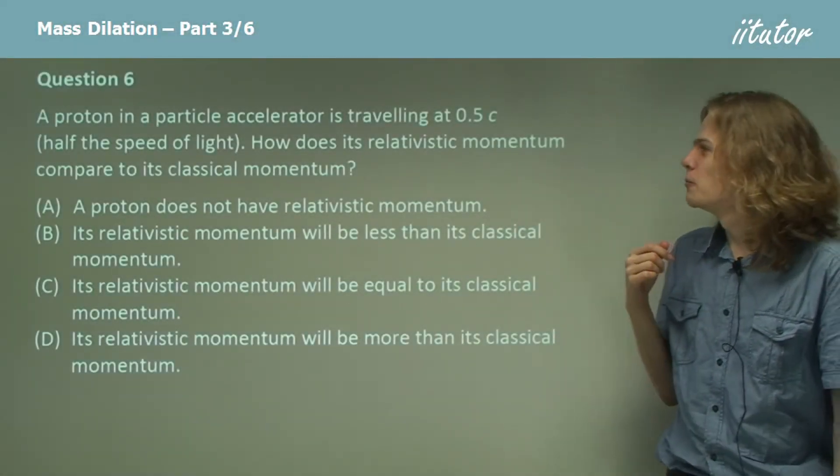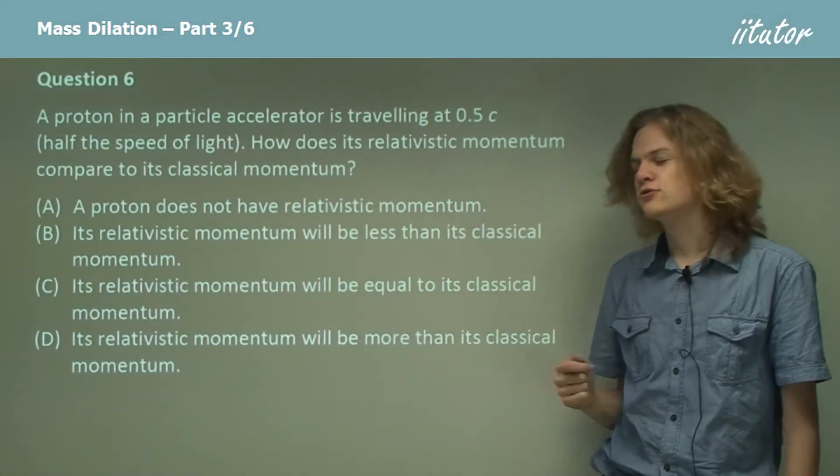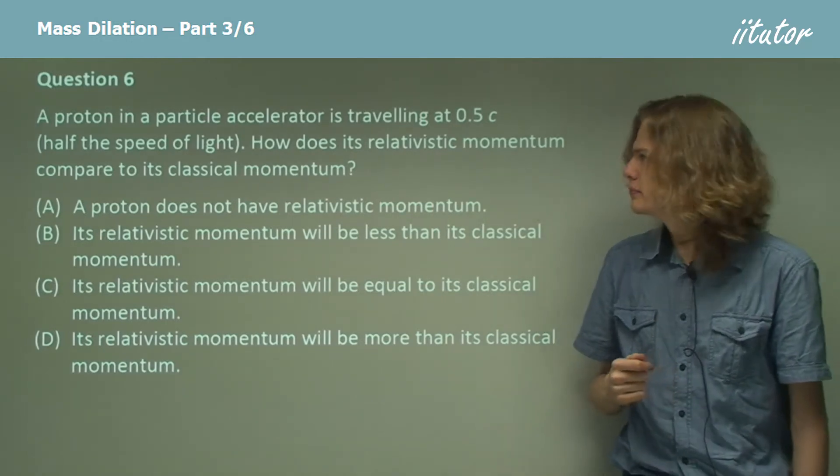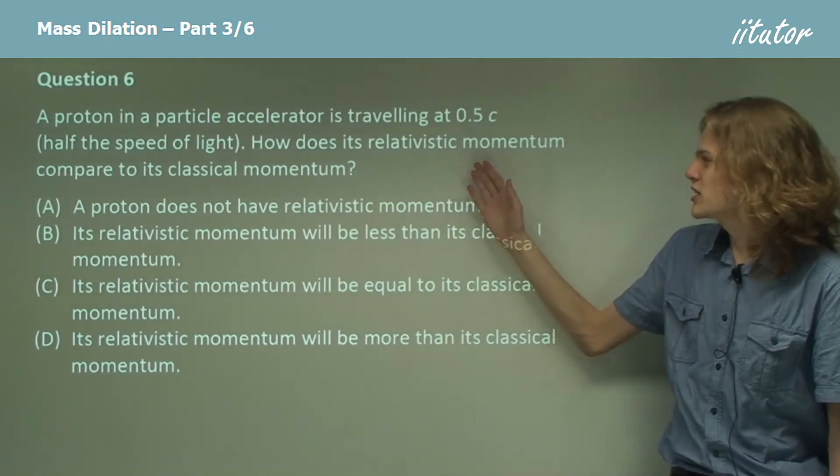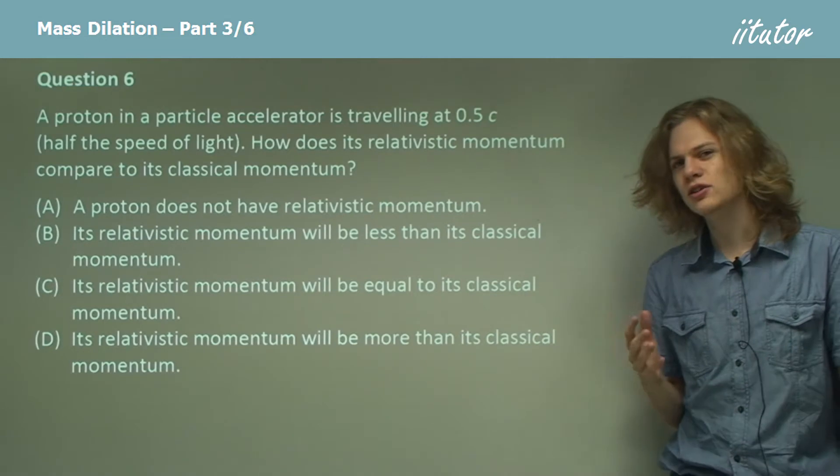Question 6. A proton in a particle accelerator is traveling at half the speed of light. How does its relativistic momentum compare to its classical momentum?